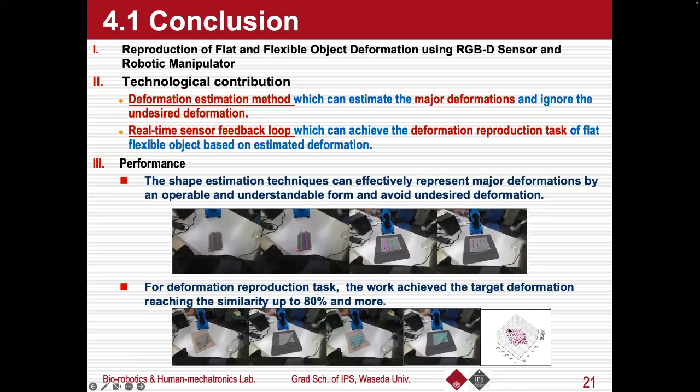Finally, the conclusion. Our work is the reproduction of flexible and flat object deformation using RGB-D sensor and robotic manipulator. It contains two components: a deformation estimation method and a real-time sensor feedback loop. Some experiments confirm the performance of the approach we proposed. The technical contributions include: the shape estimation techniques can effectively represent the major deformations by an operable and understandable form and avoid undesired deformation. For the deformation reproduction task, our work can achieve the target deformation with a similarity up to 80% and more.